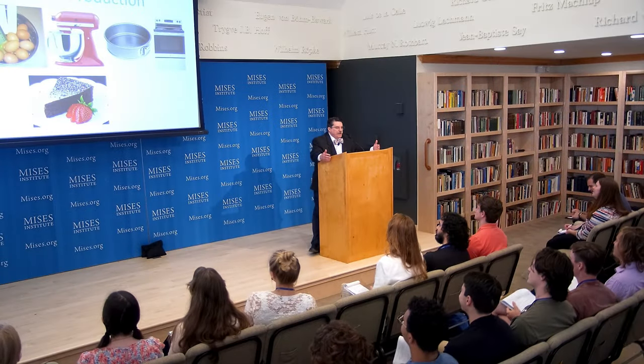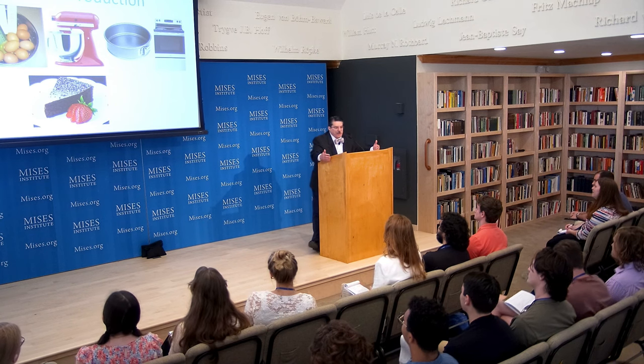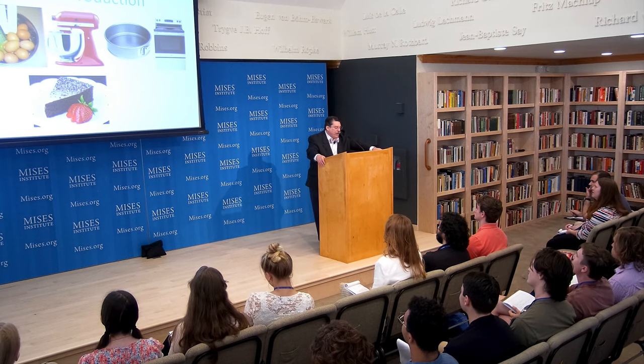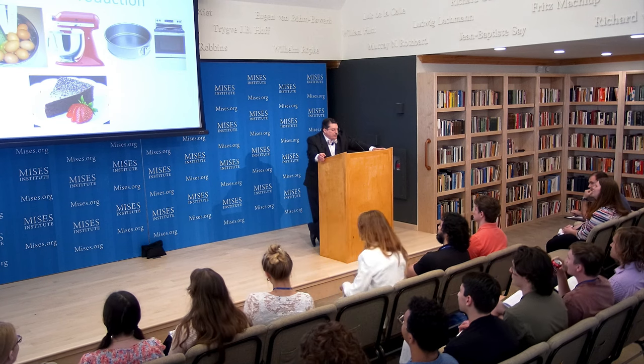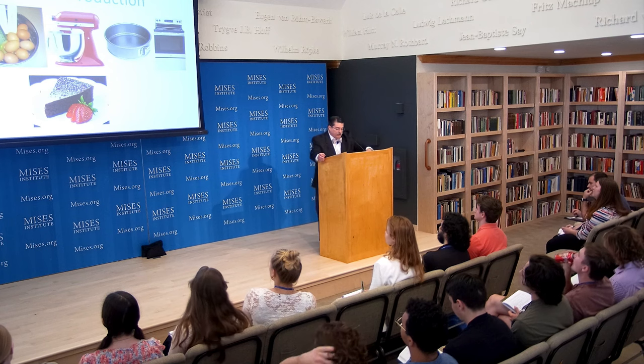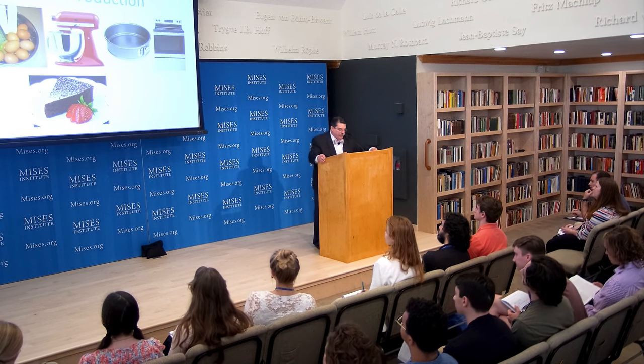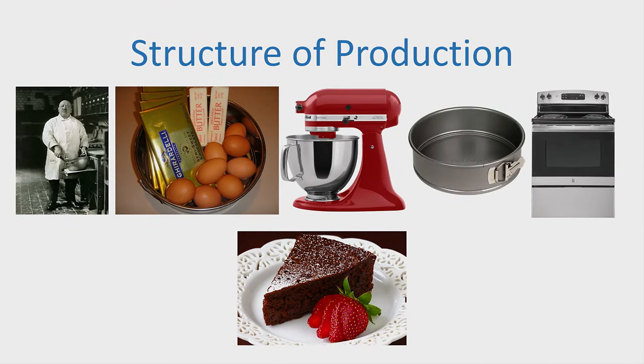Each consumer good is made possible because of its structure of production. Consider the greatest dessert in the history of human civilization: the flourless chocolate cake. To make it, the producer must obtain the services of land, labor, and capital goods. Examples include semi-sweet chocolate, half a pound of butter, eight eggs, a stand-up mixer, a spring-form pan, and an oven — among other things. And notice: before you can produce the flourless chocolate cake, the chocolate, butter, eggs, and mixer must first be produced.